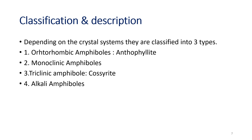Coming to classification and description: amphiboles are classified into three types — orthorhombic amphiboles, monoclinic amphiboles, and triclinic amphiboles. Only one mineral, anthophyllite, falls under orthorhombic amphiboles, while caucerite belongs to triclinic amphiboles. There are many examples of monoclinic amphiboles and alkali amphiboles as well.